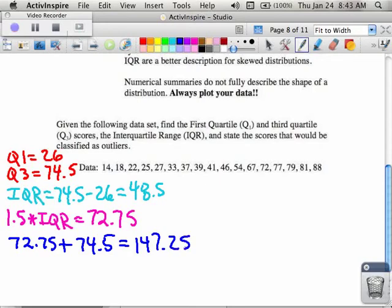So I'm looking for numbers that are greater than that or if I take the Q1 which would be 26 and subtract off 72.75, and I wrote that wrong on the first one too, didn't I? Minus 72.75, what number is that? Negative 46.75.